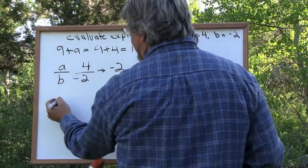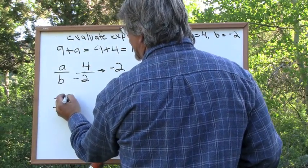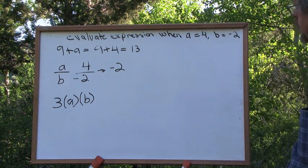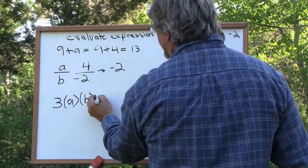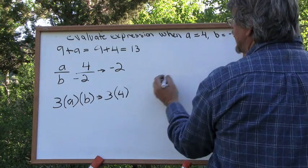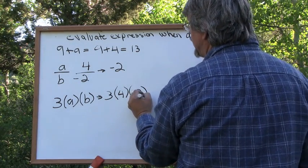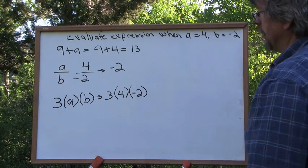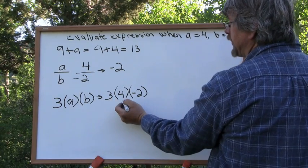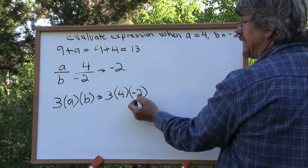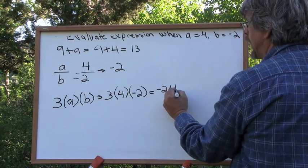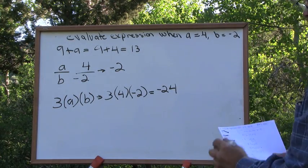What if we're given the expression 3 times A times B? A is 4, so this is going to be 3 times 4. B is negative 2, so we put in negative 2 for B and then solve. 3 times 4 is 12, times negative 2 — a positive times a negative is a negative — so this is going to be 12 times 2, which is negative 24.